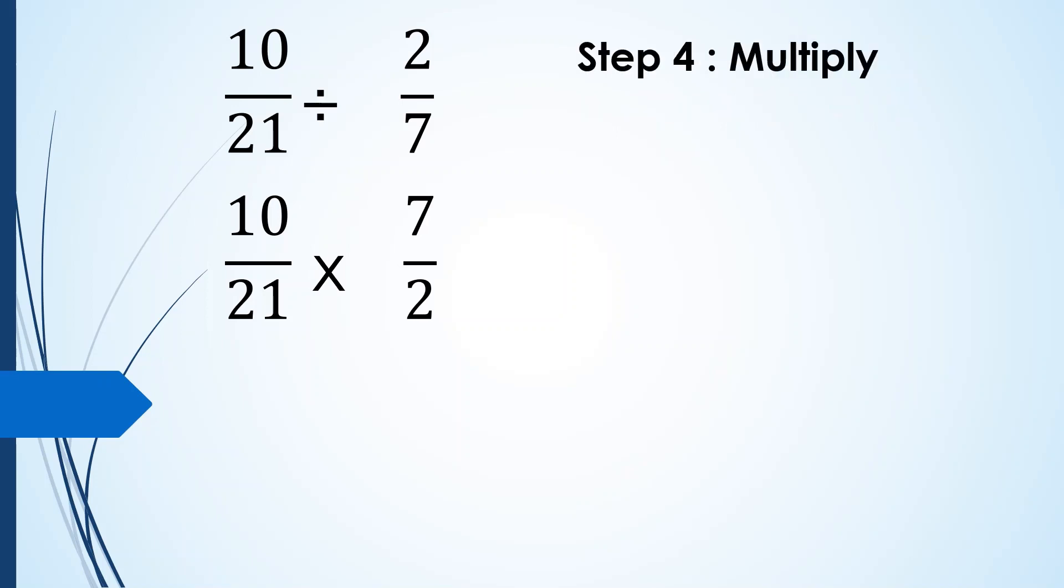Then, let us multiply. So, dito, pwede tayong gumamit ng cancellation. We can cancel 10 and 2 by dividing them both by 2. So, 10 divided by 2 is equal to 5 and 2 divided by 2 is equal to 1. We can also cancel 21 and 7. Their common factor is 7. So, 21 divided by 7 is 3 and 7 divided by 7 is equal to 1.